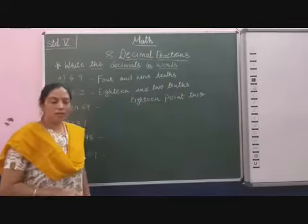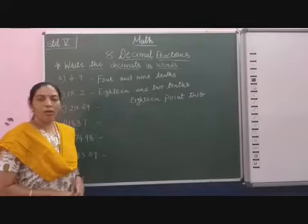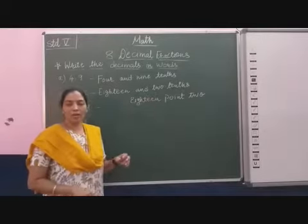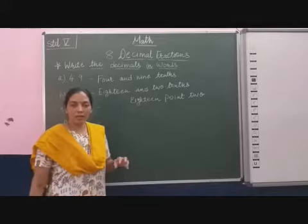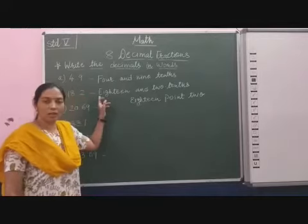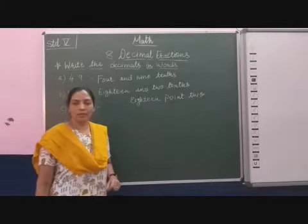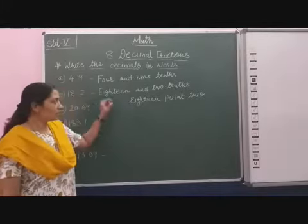You can also write in this way also 18.2. But it is very better or your understanding should be clear. You write this way. 18 and 2 tenths. So that means this is the perfect answer.